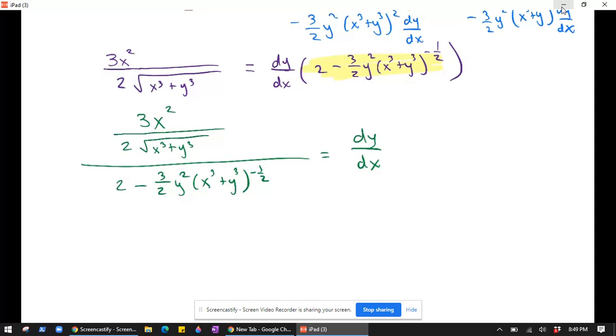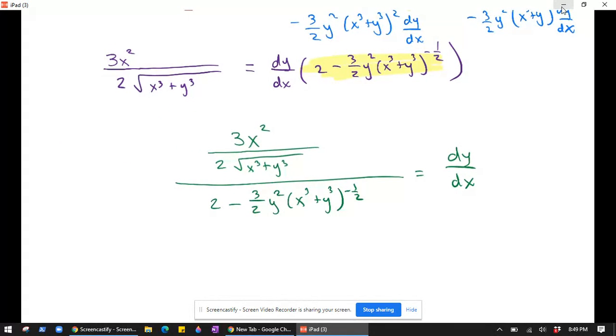So I mean, this is correct. We may not want to leave it like this. We might multiply the top and the bottom by x cubed plus y cubed to the 1/2, or the square root of x cubed plus y cubed, just to kind of clear some of these terms. So I'm going to give myself some room for that.